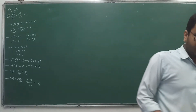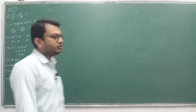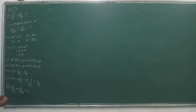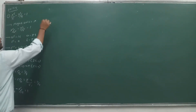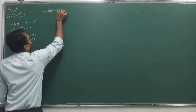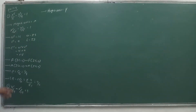Next question, number 2: y²/9 minus x²/27 = 1. Since Y comes first, the major axis will be Y. So major axis = Y. Let's start the calculation.